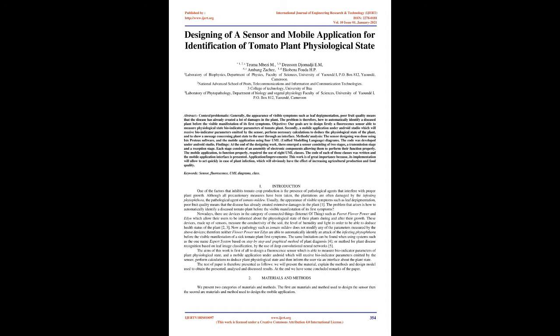Findings: at the end of the designing work, there emerged a sensor consisting of two stages, a transmission stage and a reception stage. Each stage consists of an assembly of electronic components allowing them to perform their function properly. The mobile application, to function properly, required the use of eight UML classes. The code of each of those classes was written and the mobile application interface is presented.